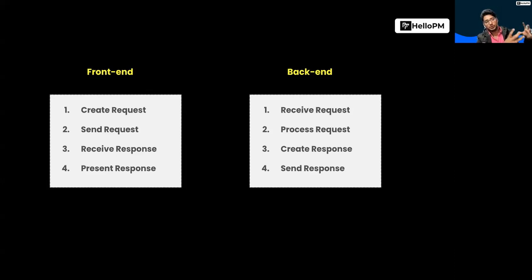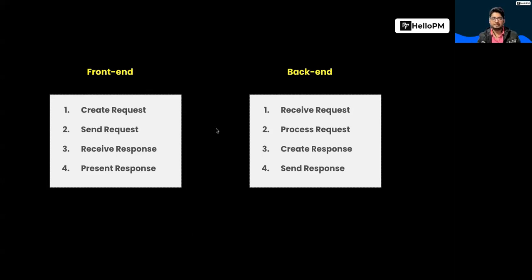The designer will give the UI to the front-end developers, and the front-end developer will make sure they can code that UI into something the browser can understand. Similarly with the back-end, you give them the business logic, which they will program in a particular language that your server can understand. Now we are going to take an example — we are going to see how Instagram works and apply this learning.